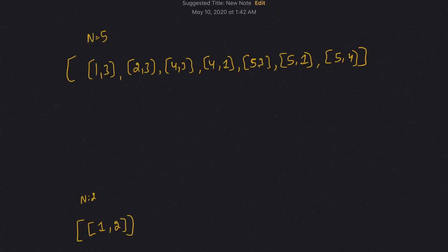I've taken several examples including the ones given in the question. The question is asking us to find whether the Town Judge exists or not, and if so, who it is. The rules are: everyone trusts the Town Judge, but the Town Judge does not trust anyone.